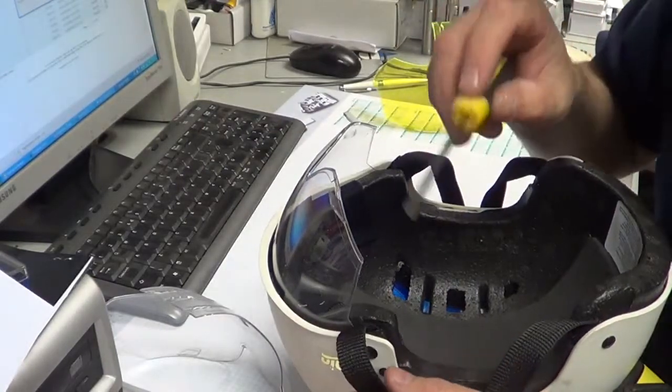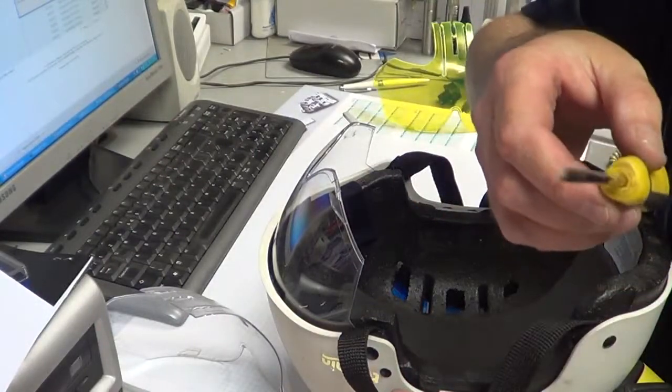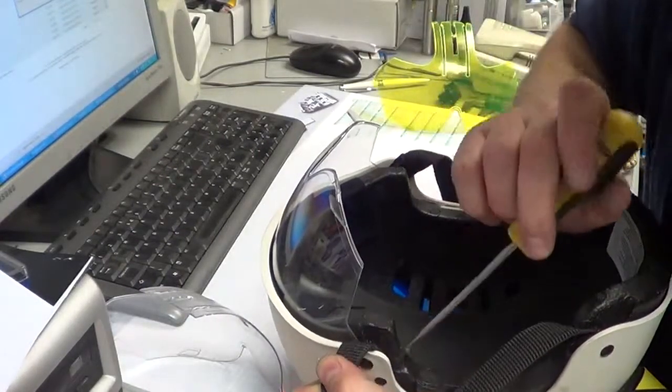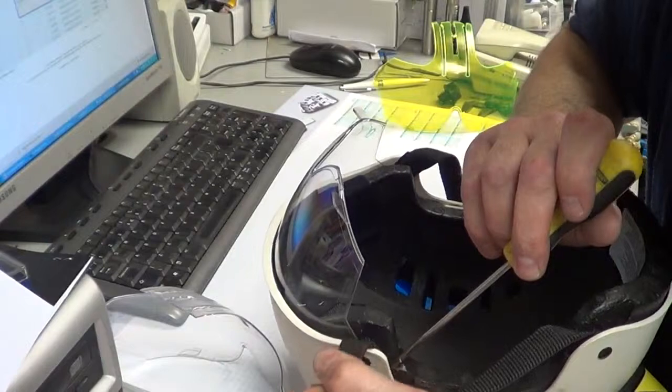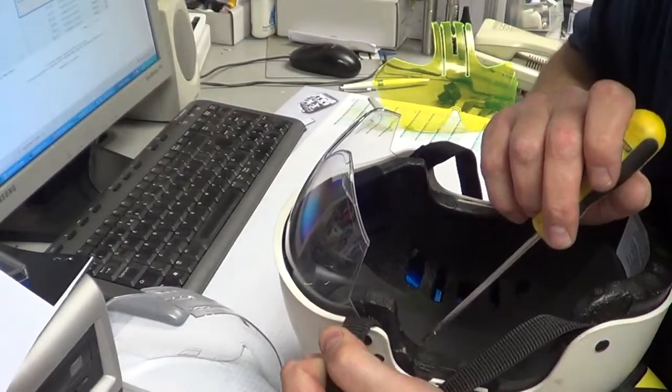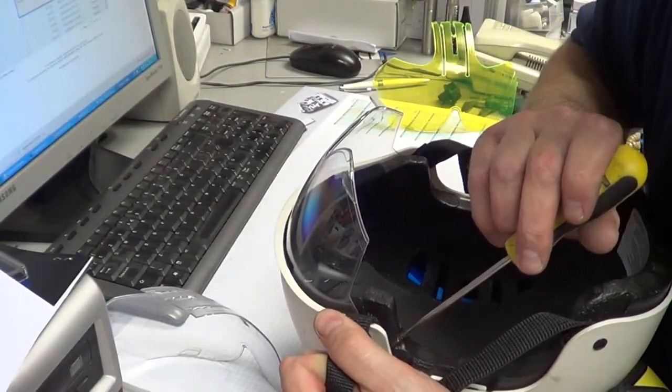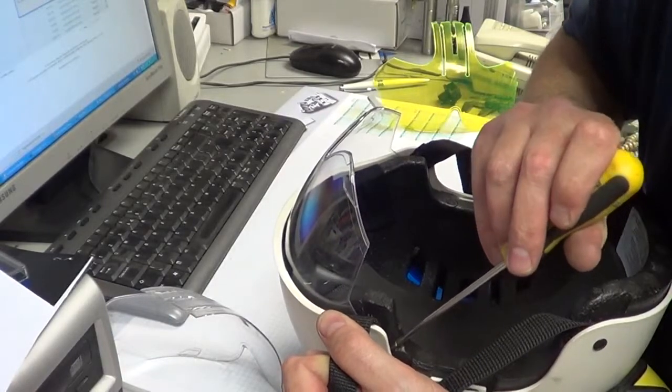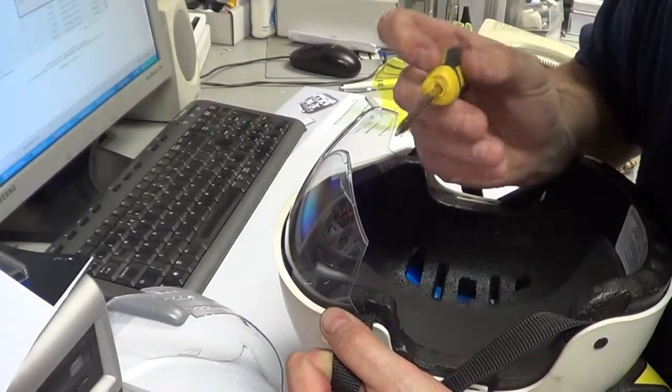Now if you have any trouble getting them in there just take a normal flat headed screwdriver and again pulling the shell away from the liner you can just help that in by pushing on the leg with the end of your screwdriver.